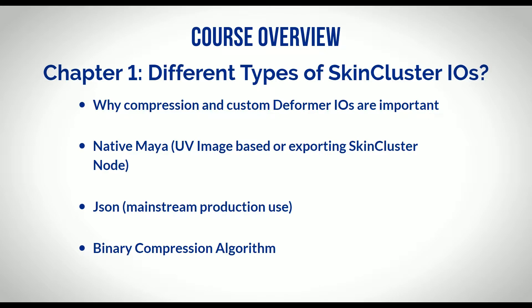We're going to talk about three different ways to export out the skin cluster. There is the native Maya way, which is based on UV space images — you have one image per joint. Or you could export out the skin cluster node itself.